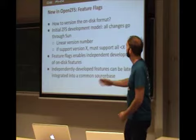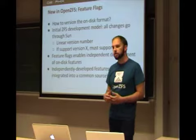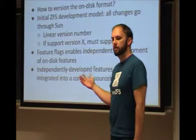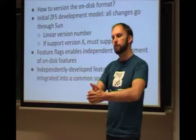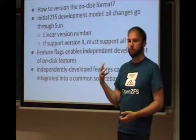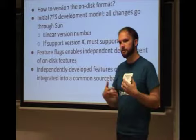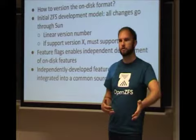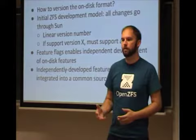Initially in the ZFS development model, all changes had to go through Sun, so we could get away with a linear on-disk version number — if the software supported version 30, it had to know about version 29, 28, etc. Feature flags enable independent development of on-disk features, and then later allow those independently developed features to be combined into one code base. So if we're working on a new feature at Delphix, we can say this storage pool uses the Delphix feature X, and when we later integrate that into Illumos and other communities, those pools will still know they support that on-disk version without conflicting with any other version.